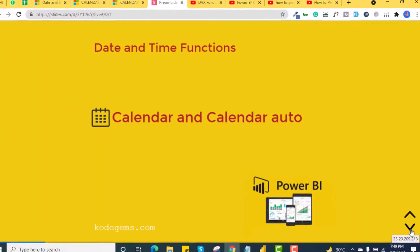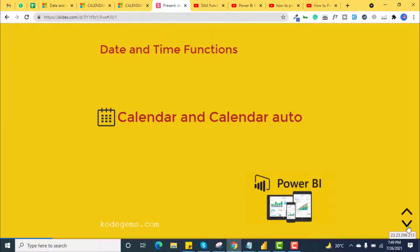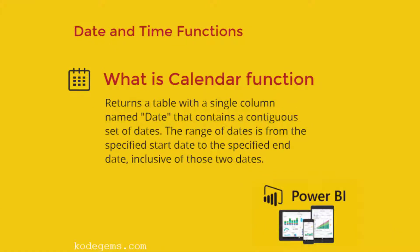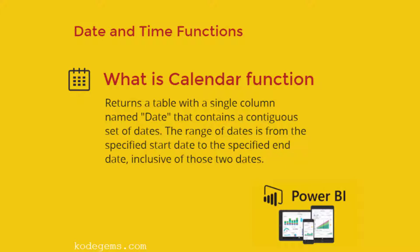First, we will see some CALENDAR and CALENDARAUTO functions. The CALENDAR function returns a table with a single column named 'date' that contains a contiguous set of dates. The range of dates is from the specified start date to the specified end date, inclusive of those two dates.